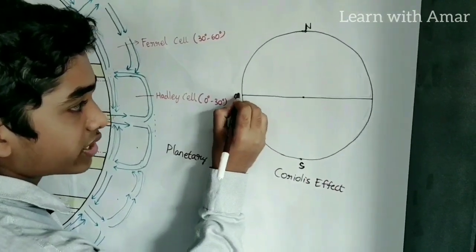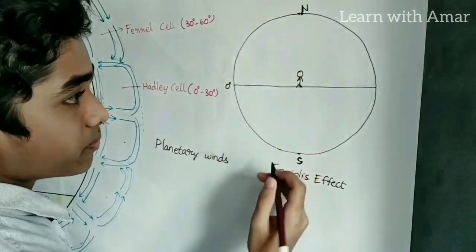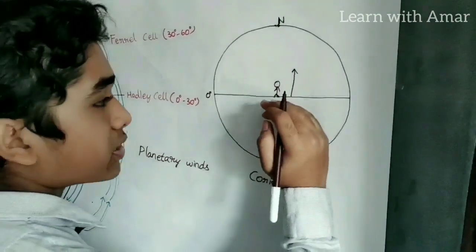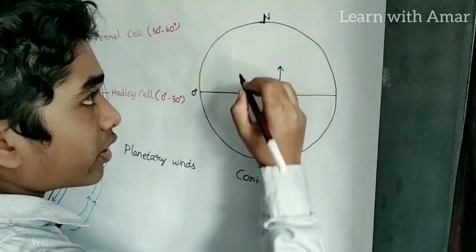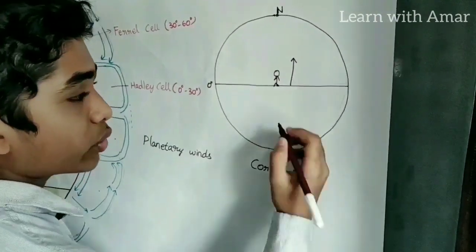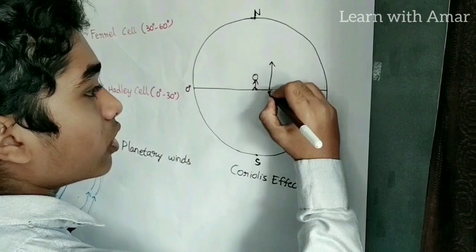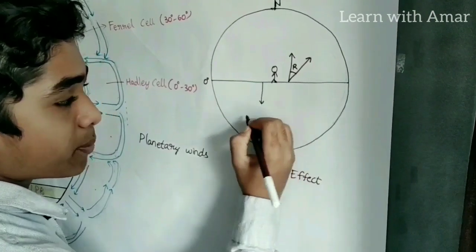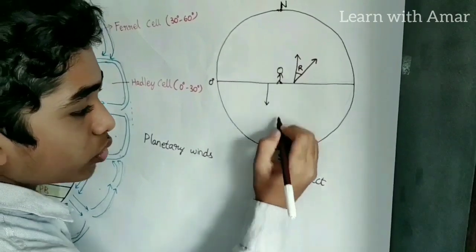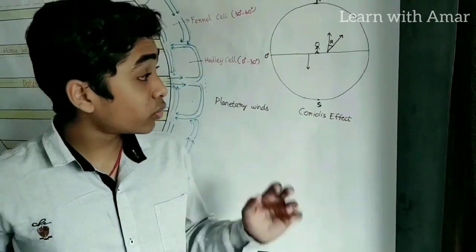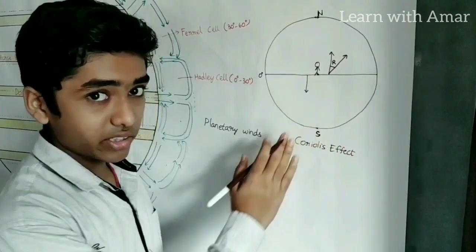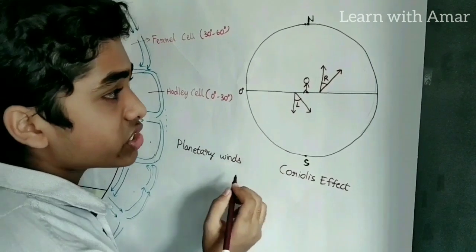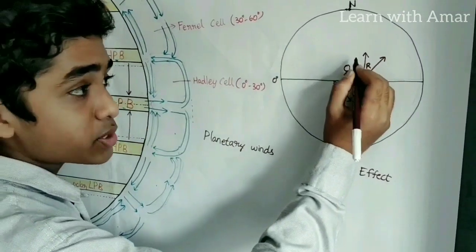Let us suppose this is the earth, this is the zero degrees equator. We are standing here, facing north. There is a wind — this is the expected path of the wind, from high pressure to low pressure. Now, in the northern hemisphere, the winds deflect to their right due to the Coriolis effect. So looking toward the north pole, the wind deflects to this right side. Similarly, in the southern hemisphere, we are now looking toward the south, and the winds deflect toward their left — so they deflect in this direction. This is how winds get deflected due to the Coriolis effect in the northern and southern hemispheres.